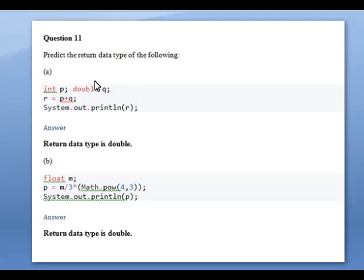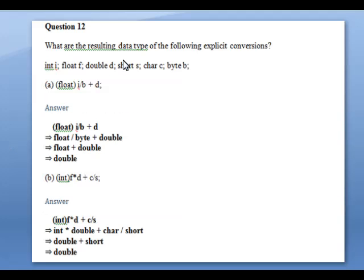Next: predict the return data type of the following expressions. First: if one variable is integer and the next variable is double, the output is double. If one is double and one is float, the result will be double. For the expression p = m / 3 * Math.pow(4, 3), the answer will be double. Next: for explicit type casting expressions — float divided by byte gives float; float plus double gives double; integer plus double gives double; character plus string gives string; integer multiplied by double gives double; character plus short gives short; and double plus short gives double.